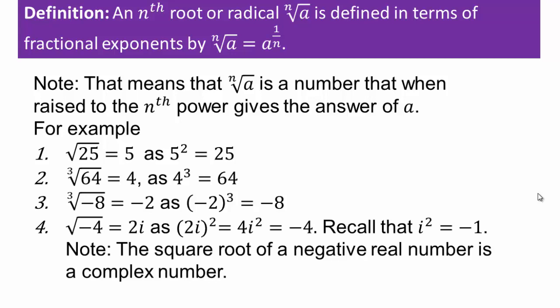Now, square root of negative 4 — what is that? Anytime you have a negative inside a square root, it's going to involve i. Because we already defined in complex numbers that square root of negative 1 is i for imaginary. Square root of 4 is 2, so square root of negative 4 is defined as 2i. Why? Because when you square it, 2²=4 and i²=−1, since i is defined as square root of negative 1.